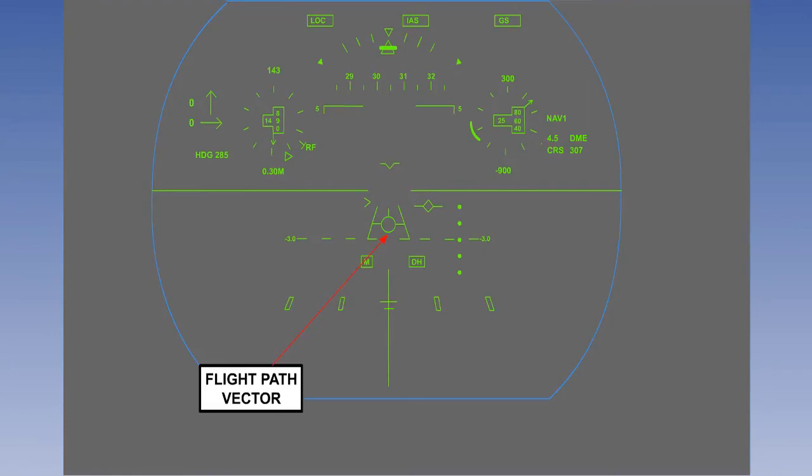The advantage of the flight path vector is that the pilot can fly the aircraft to put the symbol on the desired touchdown point and the aircraft will fly there. This is quite unlike an attitude indicator. This calculation of flight path vector has only become possible recently now that computer technology is used in modern instrumentation.